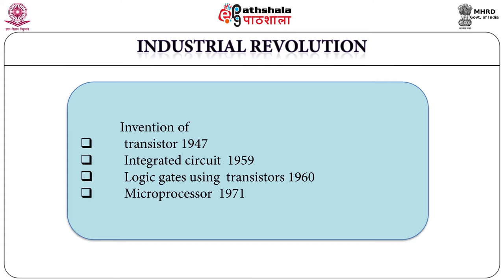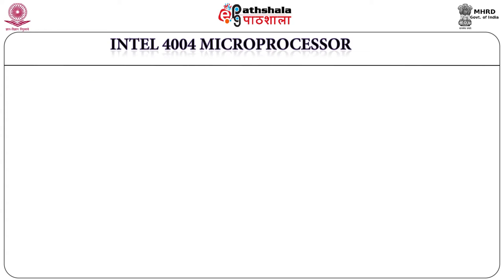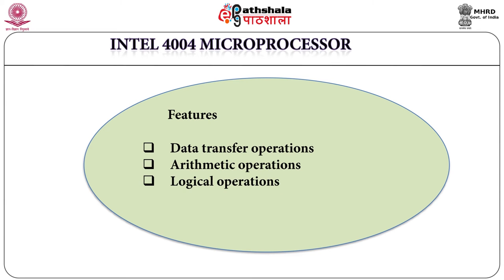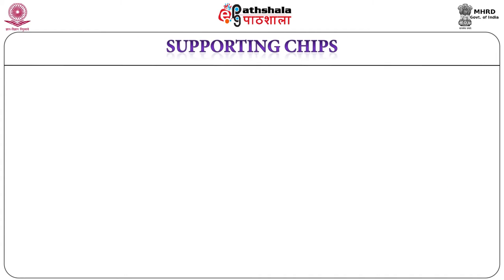The Intel 4004 consisted of more than 2000 silicon gate transistors and was the beginning of the modern technological world. It was able to perform data transfer, arithmetic, logic, control transfer and input/output control operations. Though called computer on chip, Intel 4004 was not a complete system by itself — other supporting chips were interfaced to it to complete a full system.